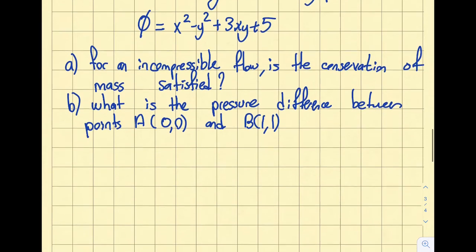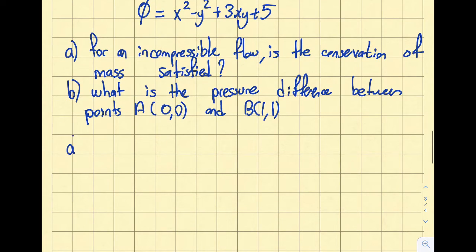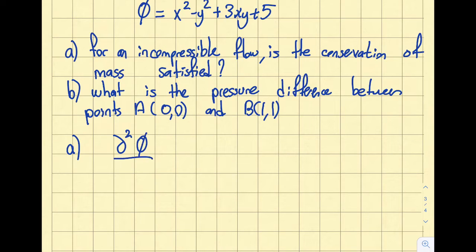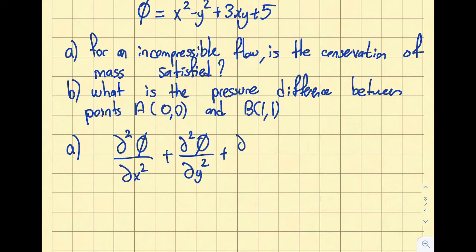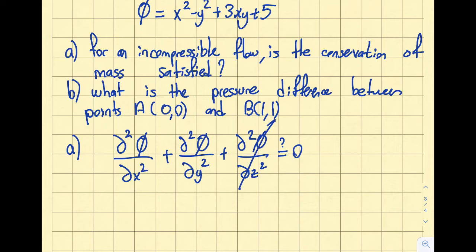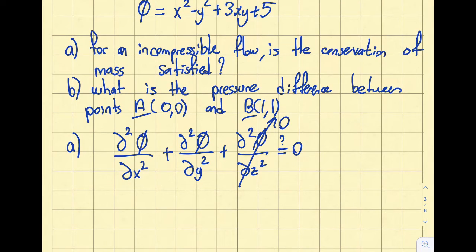Let's start with Part A. The equation we need to check for conservation of mass is the Laplace equation: ∂²φ/∂x² + ∂²φ/∂y² + ∂²φ/∂z² = 0. The third term is zero because there is no z variation in this problem.